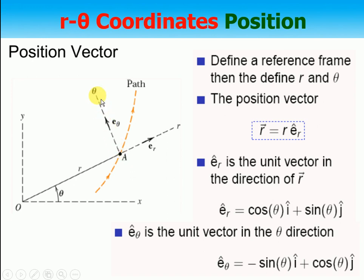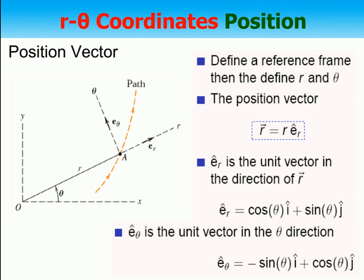Similarly, for the theta unit vector: this is my e-theta vector. This angle is theta. The x component is sin θ in the opposite direction, and the other is the y component. So it is: e-theta = −sin θ · i + cos θ · j. Therefore, er = cos θ · i + sin θ · j and e-theta = −sin θ · i + cos θ · j. This is clear from the geometry — the y component is in the positive direction and the x component is in the negative direction.